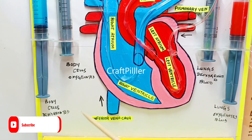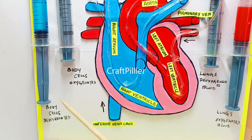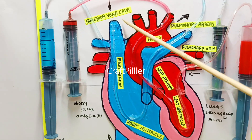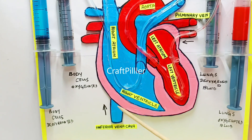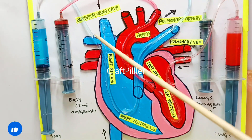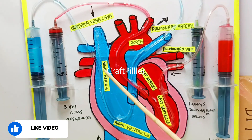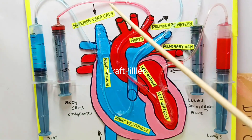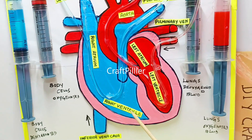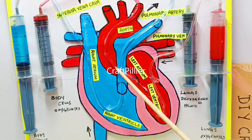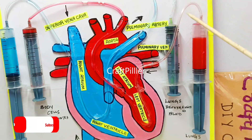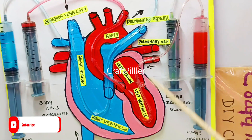Whenever the body cells have deoxygenated blood, the body sends it via the vena cava — either superior vena cava or inferior vena cava. Deoxygenated blood is represented by blue color, as you can see here. It comes from the human body cells through the vena cava to the right atrium, then to the right ventricle, and again it sends to the pulmonary artery to go to the lungs for getting oxygenated.